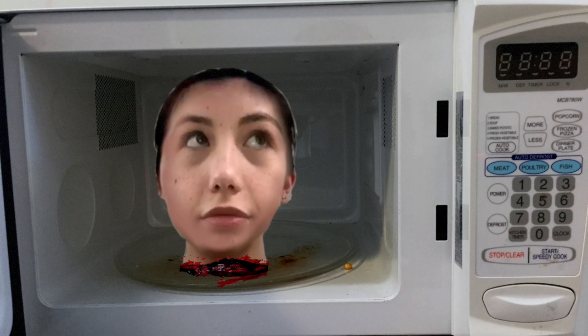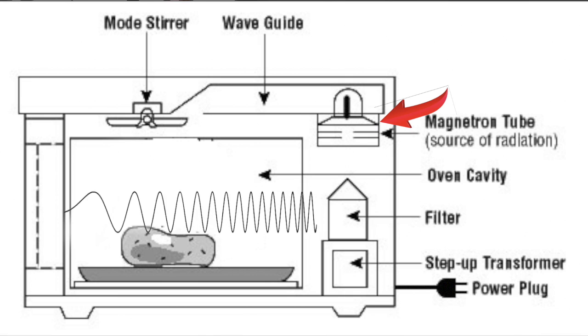Microwaves heat food by using a generator called a magnetron. The magnetron creates radio waves that bounce back and forth between reflective surfaces from inside the food chamber.